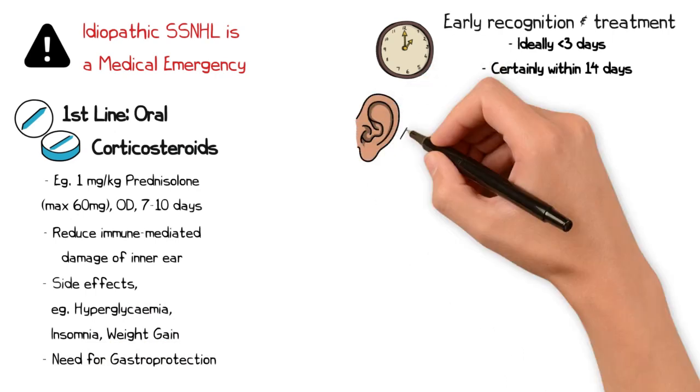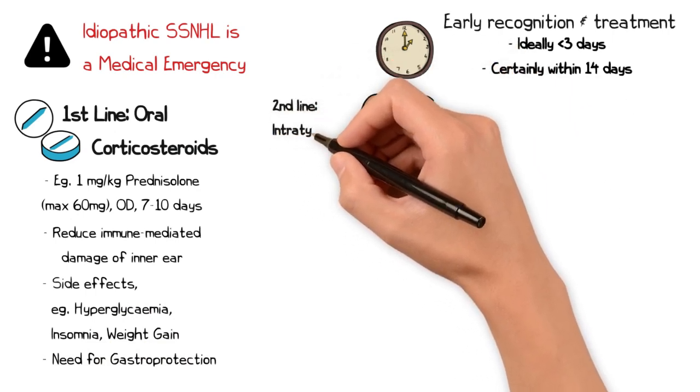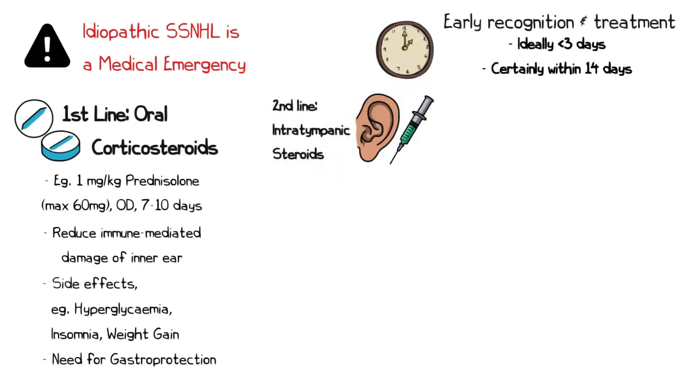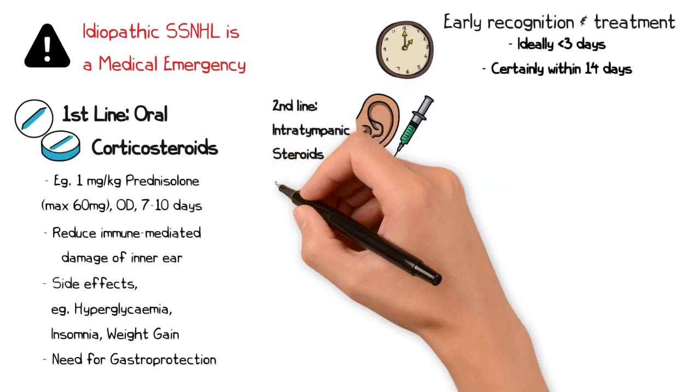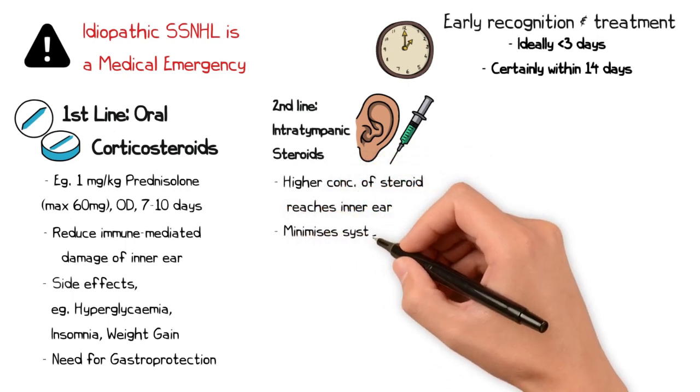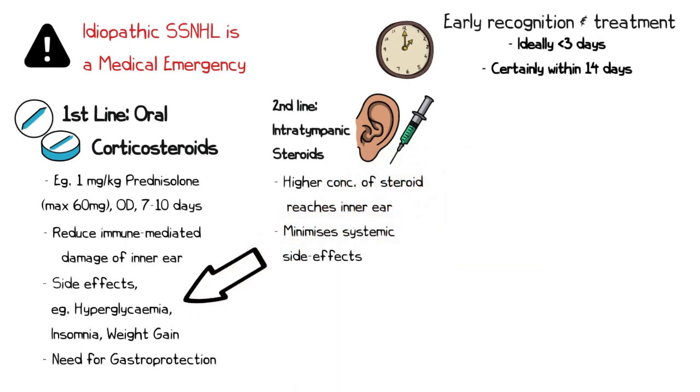If oral steroids are contraindicated or if there is an incomplete response, intratympanic steroid injections can be administered directly into the middle ear. This allows a higher concentration of the drug to reach the inner ear while minimizing systemic side effects.